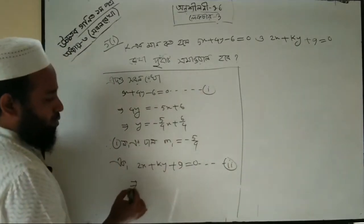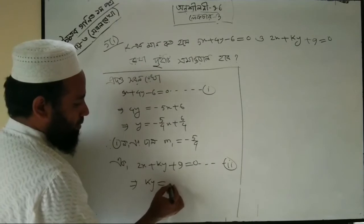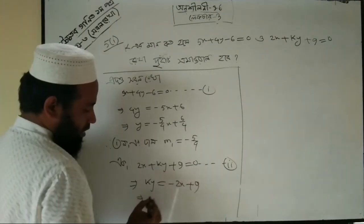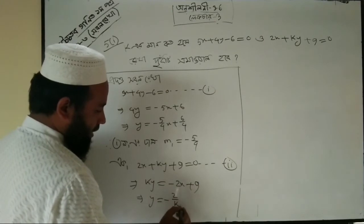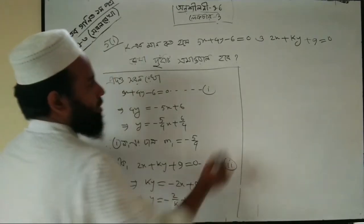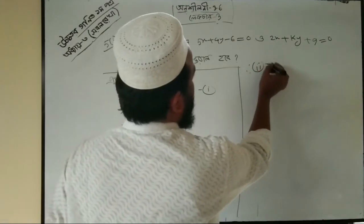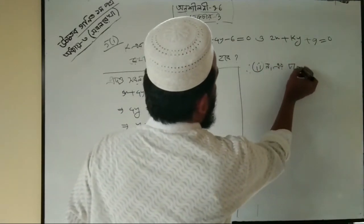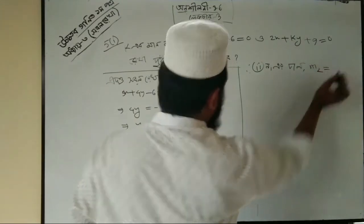Let's look at the technique. Rearranging: ky equals minus 2x plus 9, so y equals minus 2 divided by k times x plus 9 divided by k. Therefore m₂ equals minus 2 by k.